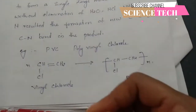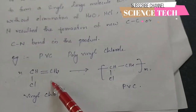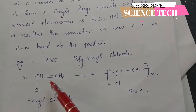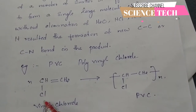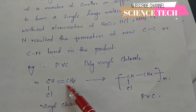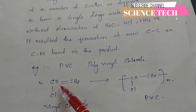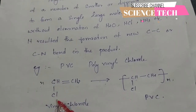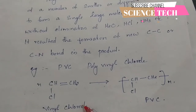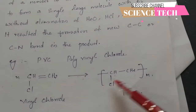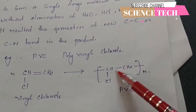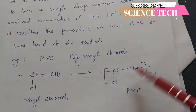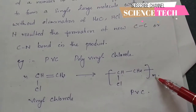One example of polymerization is polyvinyl chloride. The monomer is vinyl chloride, which is formed by replacing one hydrogen in ethene with chlorine. The vinyl chloride monomer (CH2=CHCl) polymerizes — the double bond becomes a single bond — and N units combine to form polyvinyl chloride (PVC).